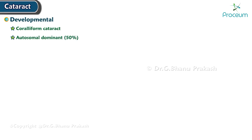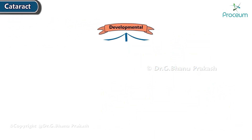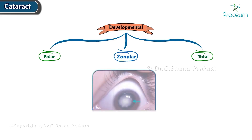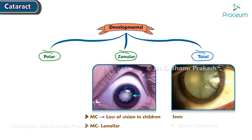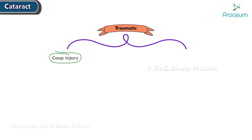Developmental cataract is a coralliform cataract; 50% are autosomal dominant. There is no profound loss of vision. It can be polar, zonular, or total cataract. Zonular cataract is the most common cataract leading to loss of vision in children; among zonular cataracts, the most common is lamellar. Total cataract is seen with Down syndrome and congenital rubella syndrome.